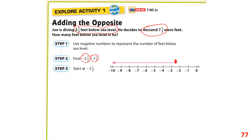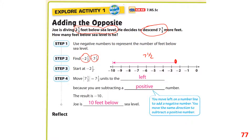From negative two and a half, Joe descends seven and a half more feet, so we move to the left seven and a half spaces. We end up at negative 10. Because we're subtracting a positive number, the result is negative 10 — Joe is 10 feet below sea level.